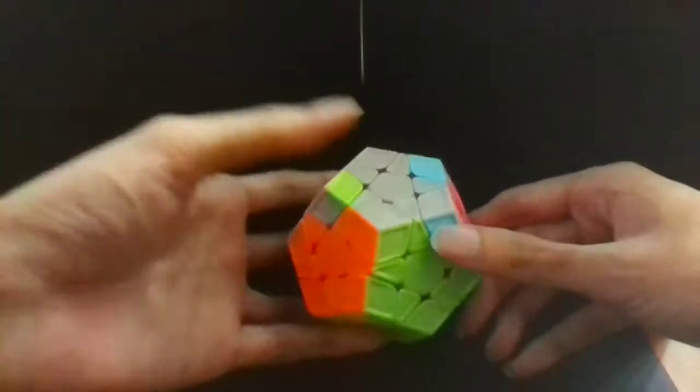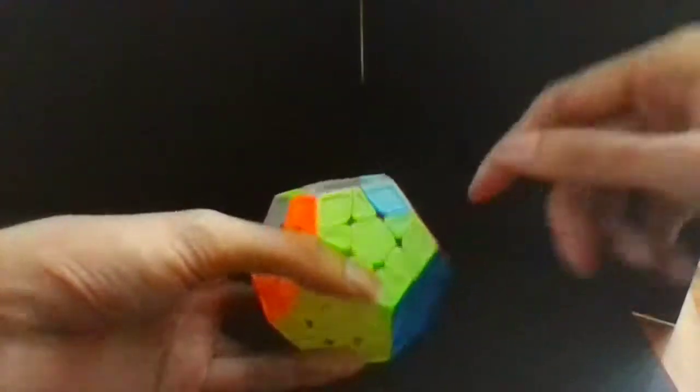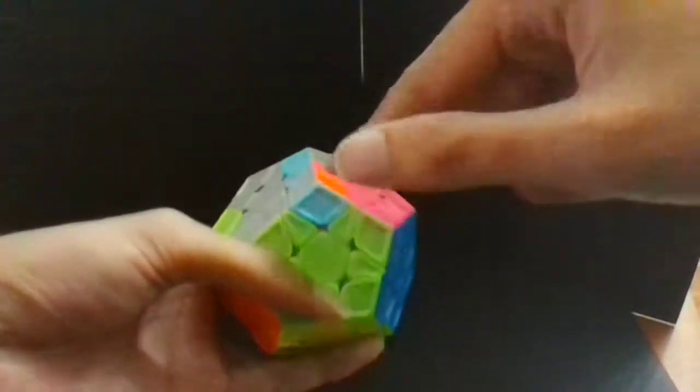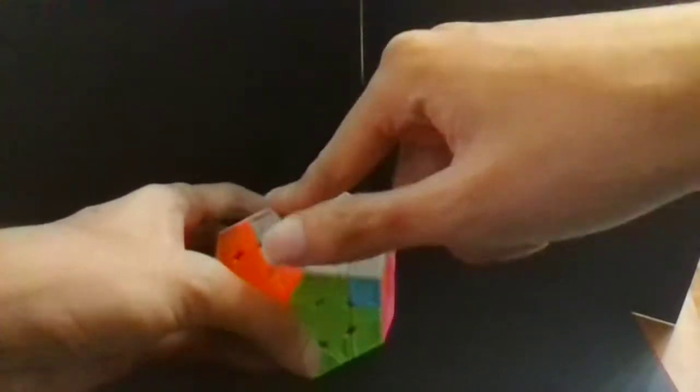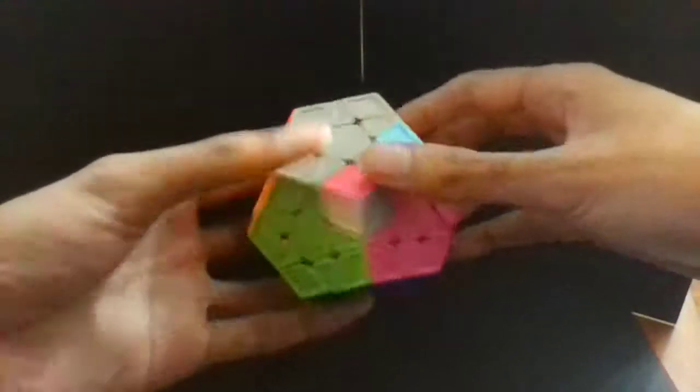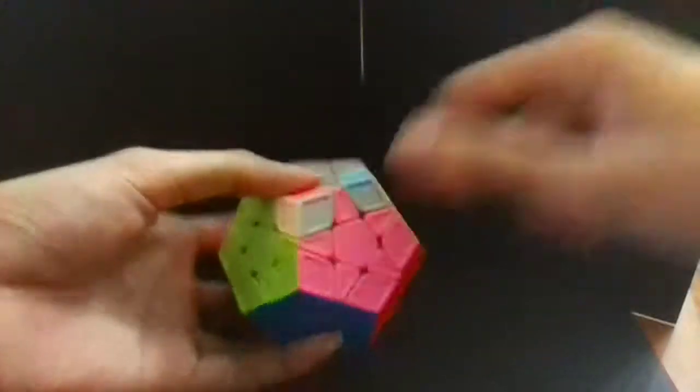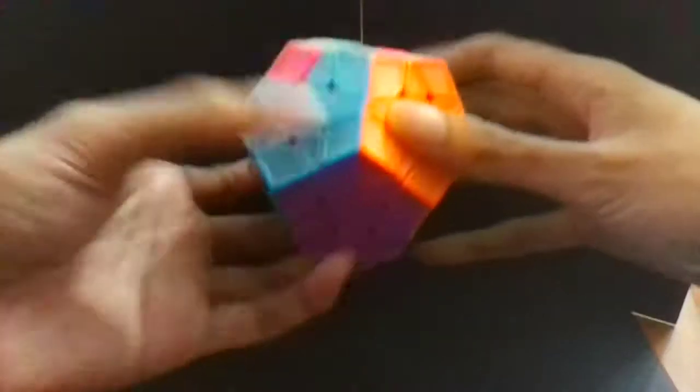And then we use a commutator to solve one corner first. In this case we would choose to solve this blue-orange corner because it's at this position. And then we can use a commutator for these last three corners.